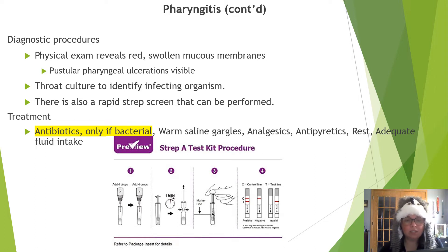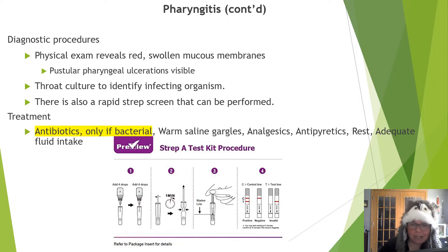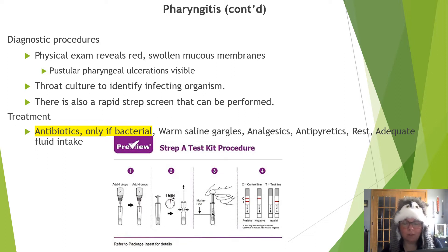This image is a rapid strep insert card you could encounter in labs. There are many variations of it — it works like a pregnancy test. One line is negative, two lines the patient is positive, and results are ready in minutes.